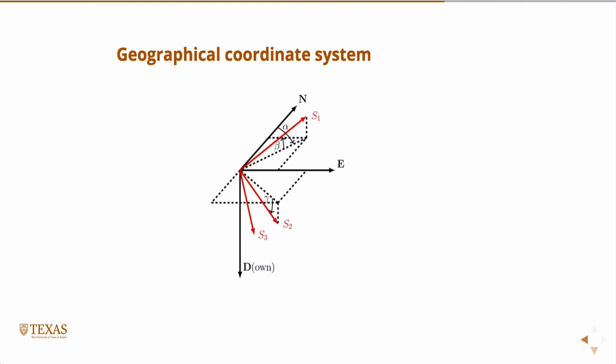So the first thing we're going to do is we're going to assume alpha is non-zero. So if we look down this axis, if we get up in a plane and we look down on the earth, then we're going to have north and east and S1 and S2, and the angle between them will be alpha.